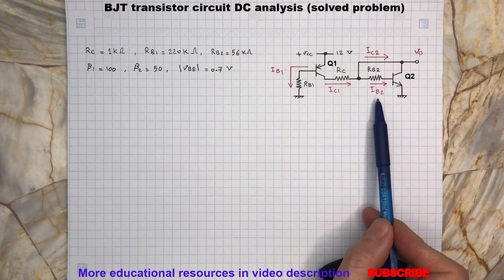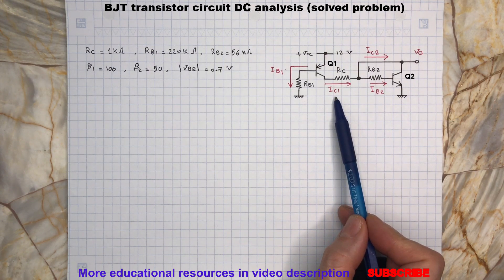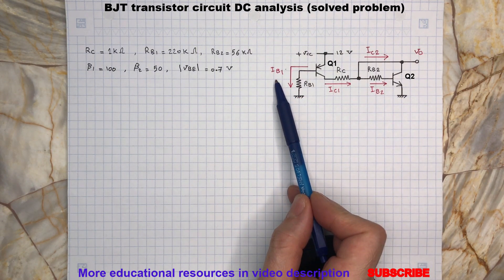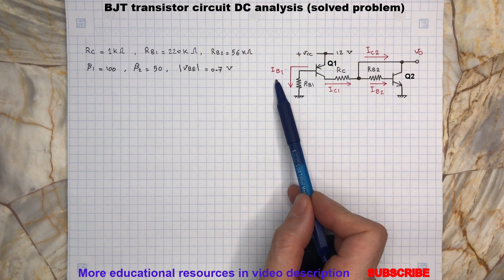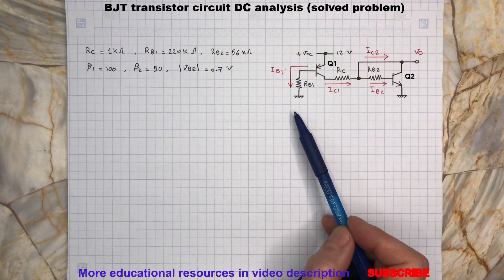To find the current IB2 we need to calculate IC1, but this current depends on IB1 which is the current flowing through the base of Q1. So let's write a KVL to determine IB1.